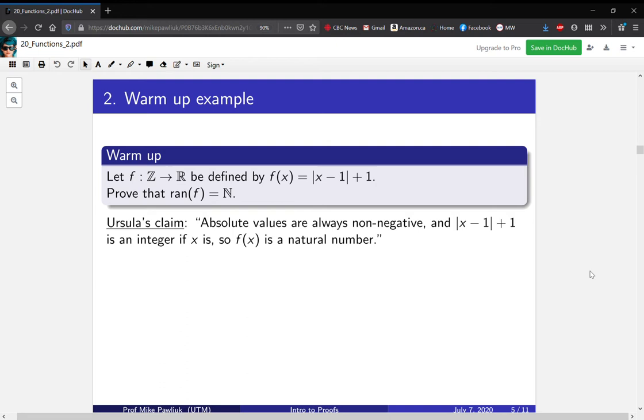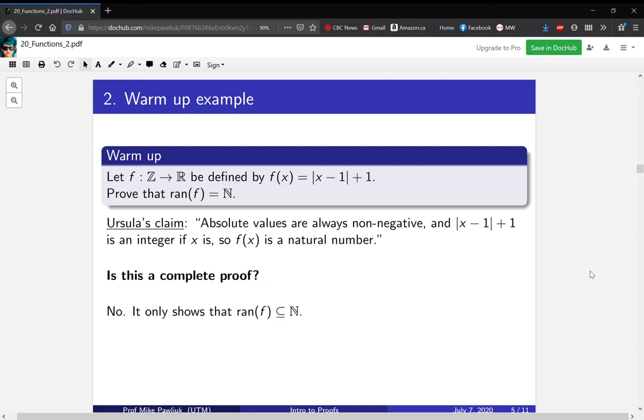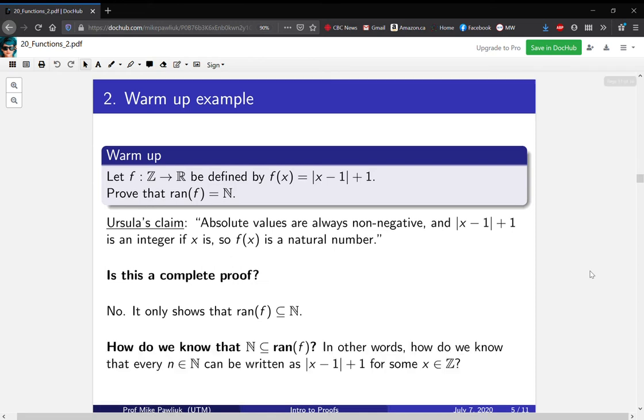And we ask, is this a complete proof? Take a moment to think about this. If you think this is a complete proof, you've fallen into the same trap as Ursula. This is not a complete proof because it only shows that the range is a subset of the naturals. To show that the range is actually equal to the naturals, you have to show that every natural actually gets hit.